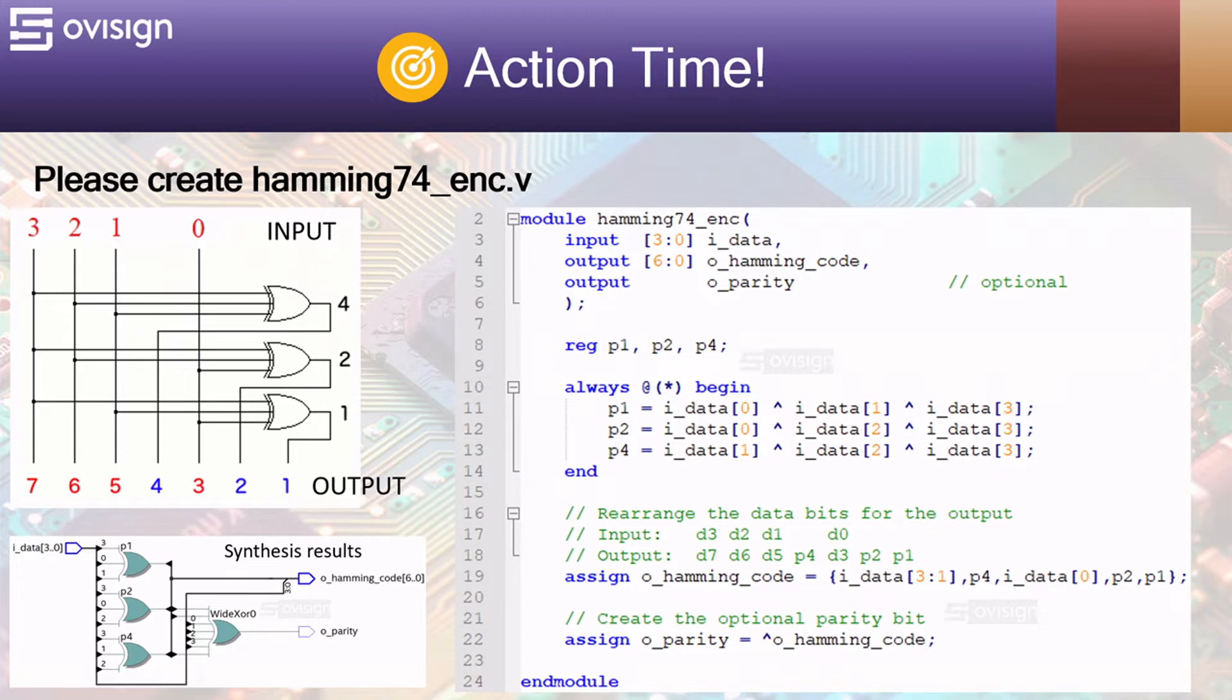I decided to use a single always at star procedure to model all three XOR gates. This makes the code more compact. At lines 11 to 13 we model all three parity bits according to the circuit schematic. The parity bits can also be modeled using continuous assignments but then you have to declare P1, P2 and P4 using the wire type.